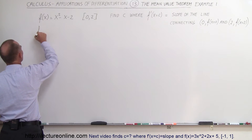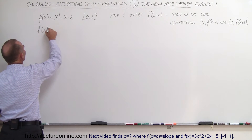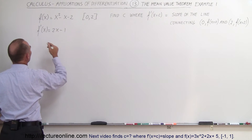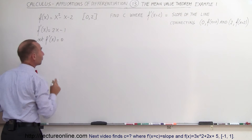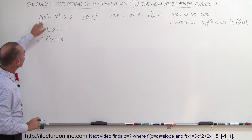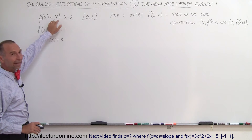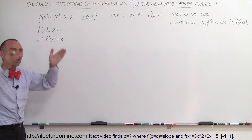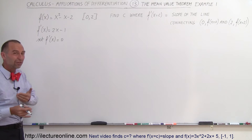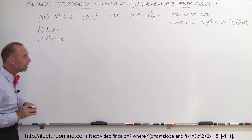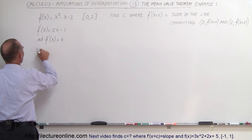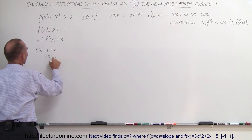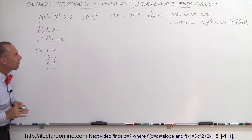Let's start by taking the derivative. f prime of x is equal to 2x minus 1. Now we're going to set that derivative equal to 0 to find the local max or min. In this case, we realize it's a parabola with a positive first term, which means it opens up, so this will give us the minimum value. So we have 2x minus 1 equals 0, which gives us x equals one half.